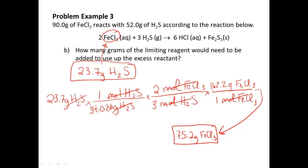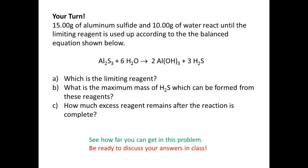I want you to practice this now with problem example four. You have 15.00 grams of aluminum sulfide and 10.00 grams of water reacting until the limiting reagent is used up, according to the balanced equation shown. You're going to answer three questions: find the limiting reactant, find the maximum amount of H2S product that can be formed, and — what we covered in this video — figure out how much excess reagent remains after the reaction is complete. See how far you can get; we'll go over this as a class.